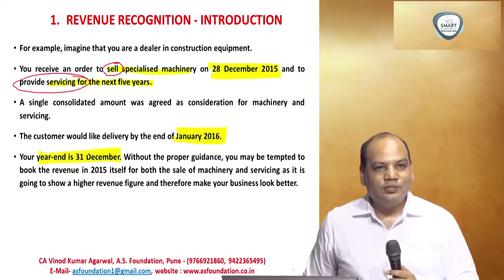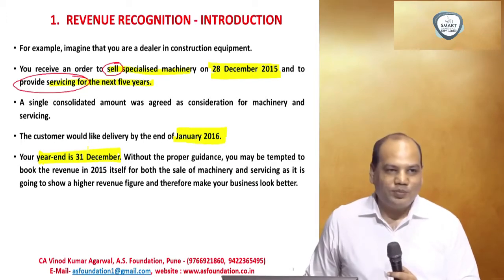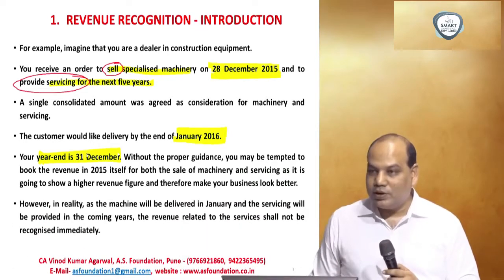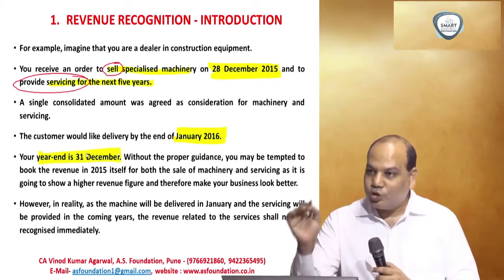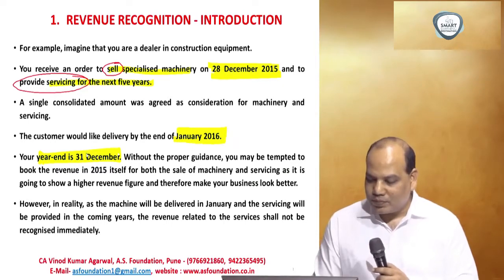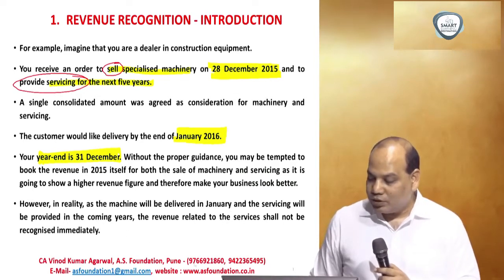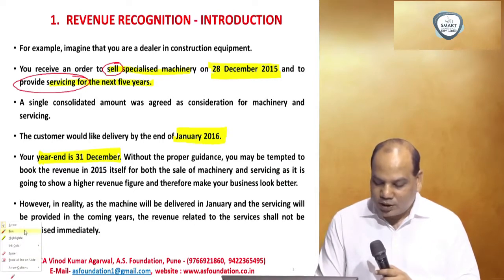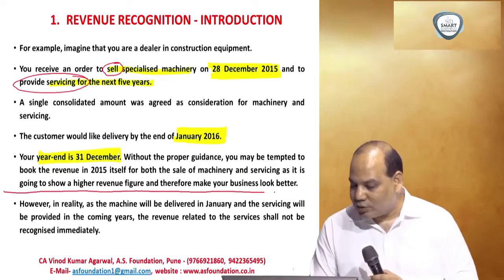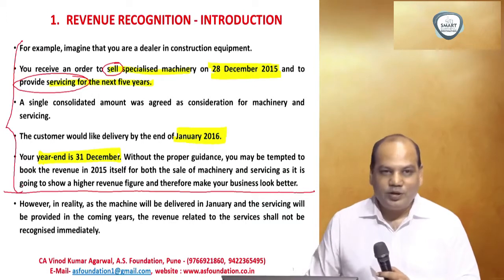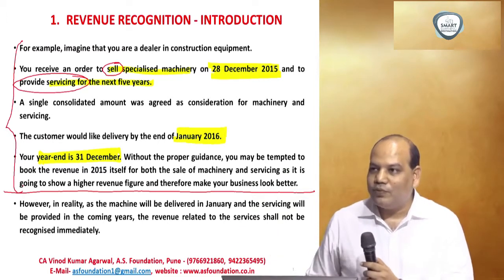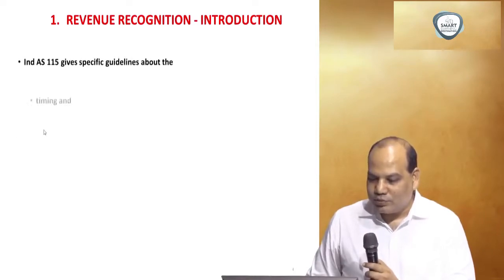You want to show higher sales in 2015: more sales, more profit, more EPS, more commission to the managing director. But this standard will say it is not appropriate to recognize revenue in 2015. In reality, the machine will be delivered in January, and services will be provided over coming years, so revenue related to services shall not be recognized immediately. In the exam, the question may ask whether the company is justified in booking revenue in 2015, and your answer will be no.